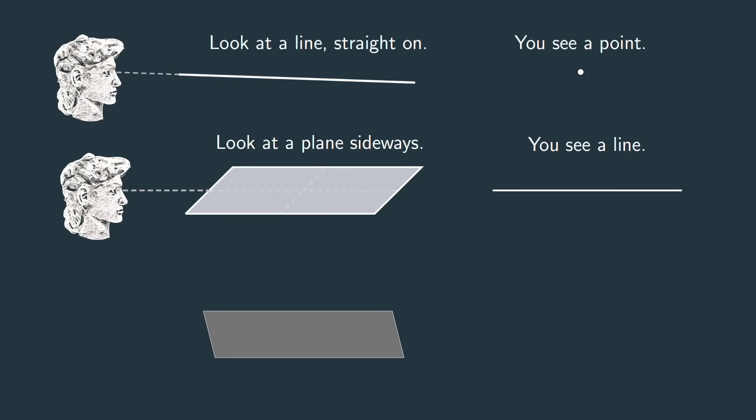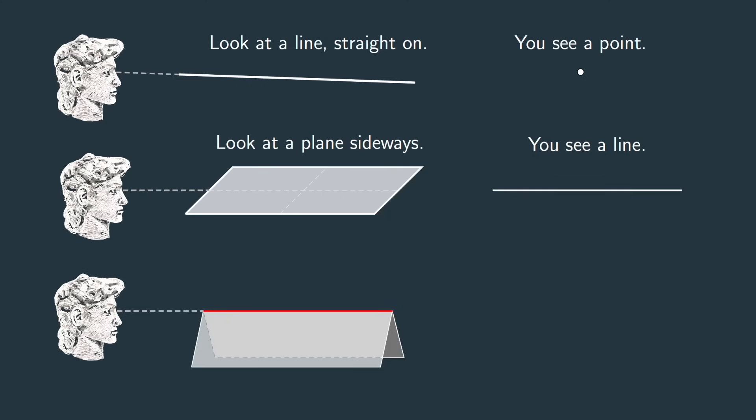Let's put these two ideas together. Take a plane in space and another plane that intersects it at a line shown red. Now look at this configuration straight down that red line and think of what you'd see.